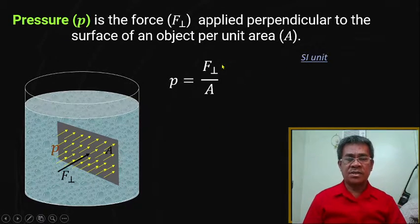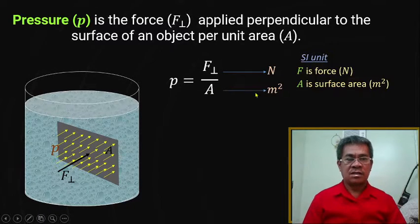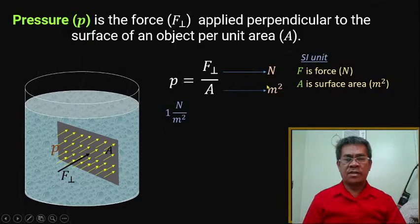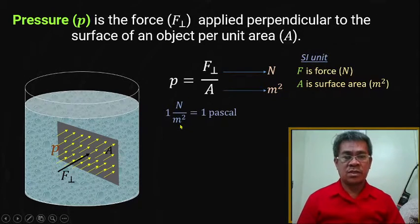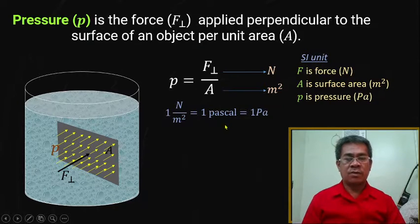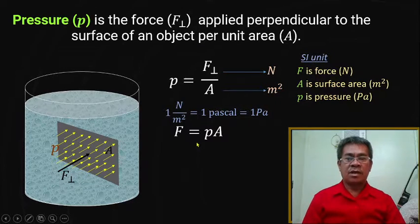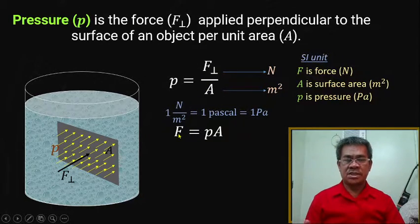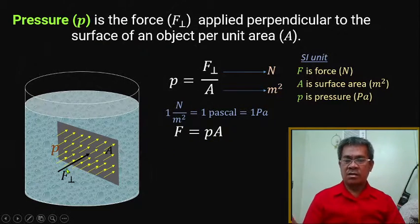The unit of force is newton, and the surface area is in square meters, so the unit of pressure becomes newton per square meter. One newton per square meter is one pascal, or Pa. If we take the cross product, we can solve for the value of the force — the force is the product of pressure times area. So knowing the pressure, calculating the force perpendicular to the area is just the product of pressure and surface area.